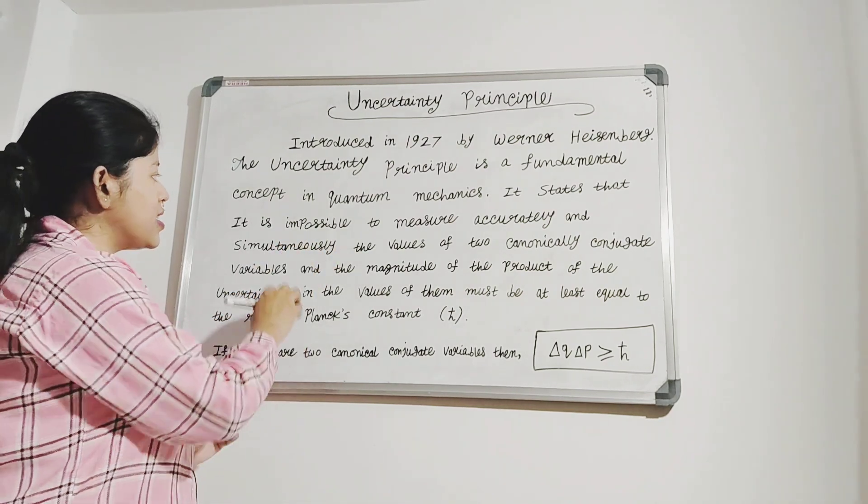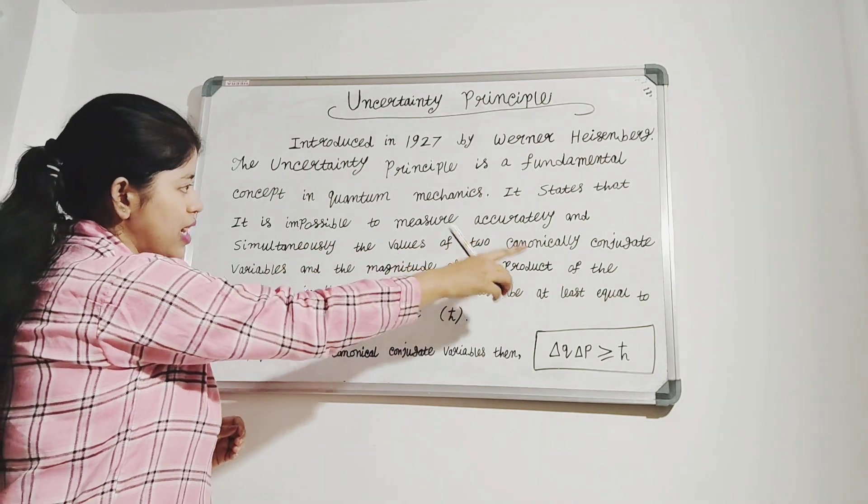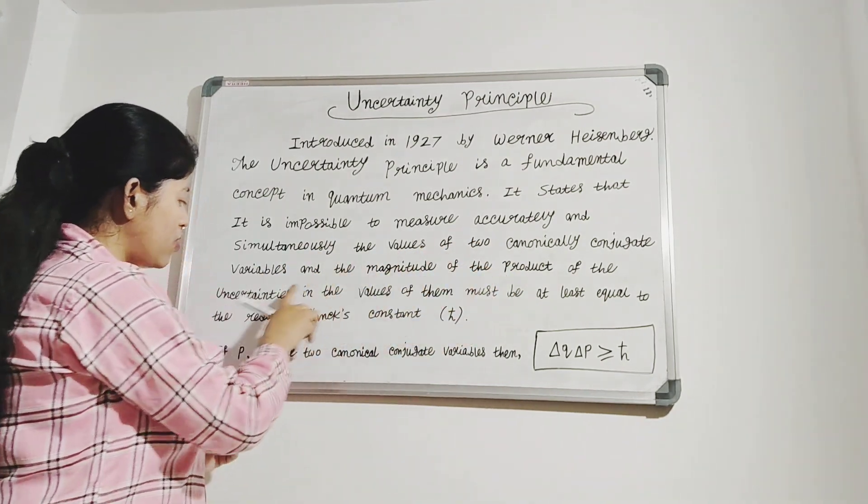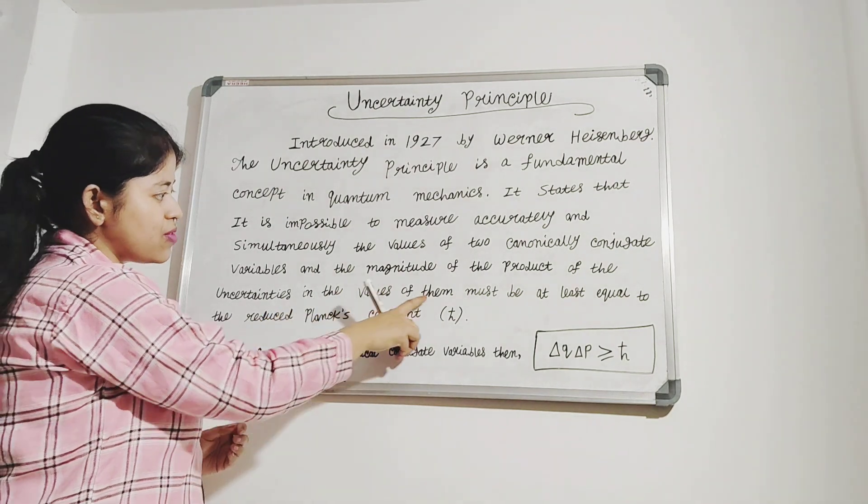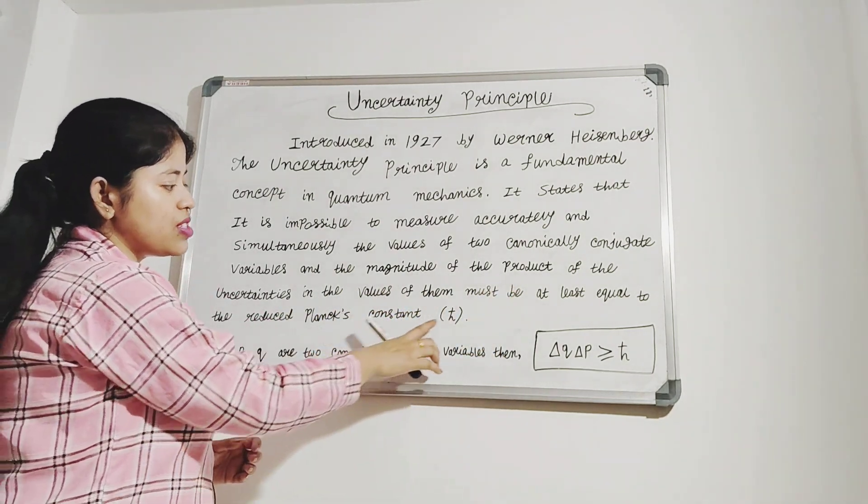It states that it is impossible to measure accurately and simultaneously the values of two canonically conjugate variables, and the magnitude of the product of the uncertainties in their values must be at least equal to the reduced Planck constant, which is h-cut.